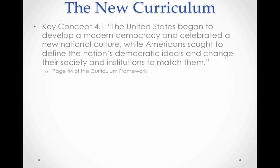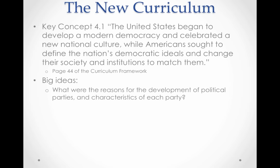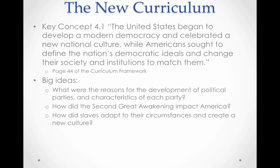Key Concept 4.1 states: the United States began to develop a modern democracy and celebrate a new national culture, while Americans sought to define the nation's democratic ideals and change their society and institutions to match them. Big idea questions to think about: What were the reasons for the development of political parties? How did the Second Great Awakening impact America? How did slaves adapt to their circumstances and create a new culture?